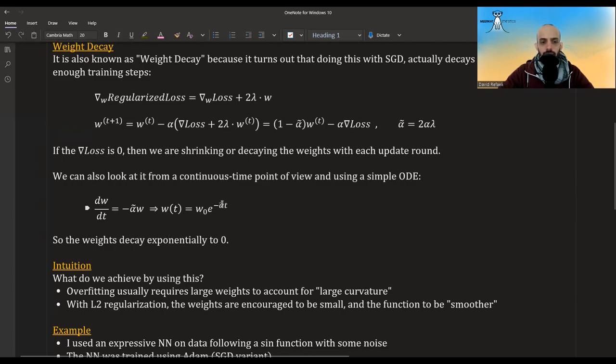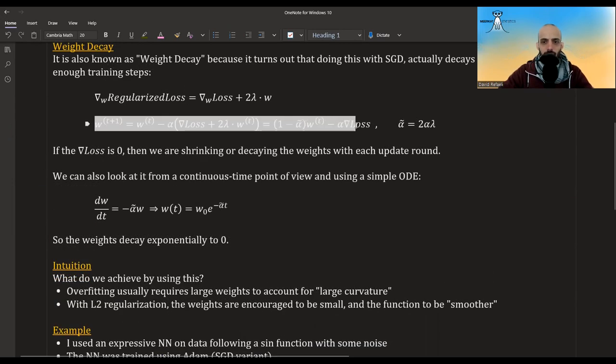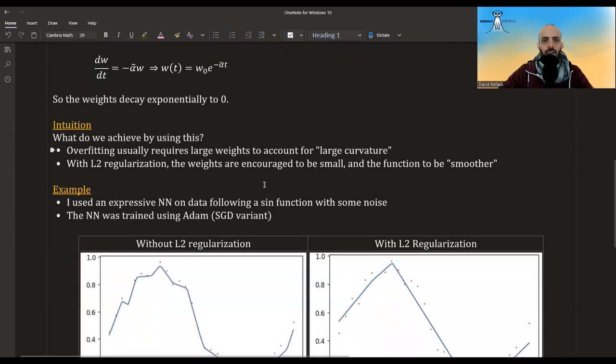In this case, we can see that the weights decay exponentially to zero. But this is just an analogy because in real life, of course, we don't have continuous time. We are doing discrete time steps. But even here, we see that it shrinks.